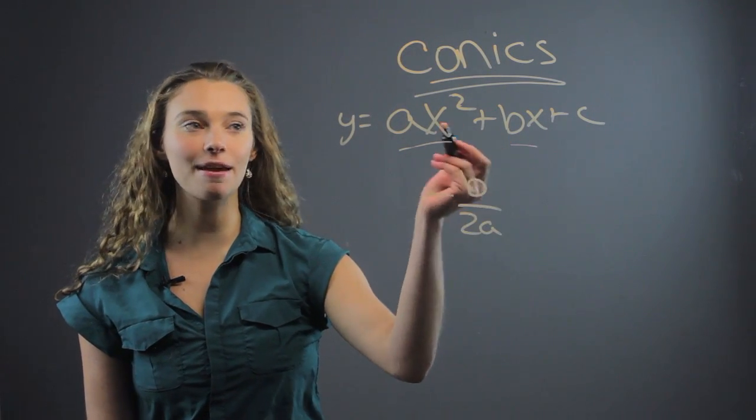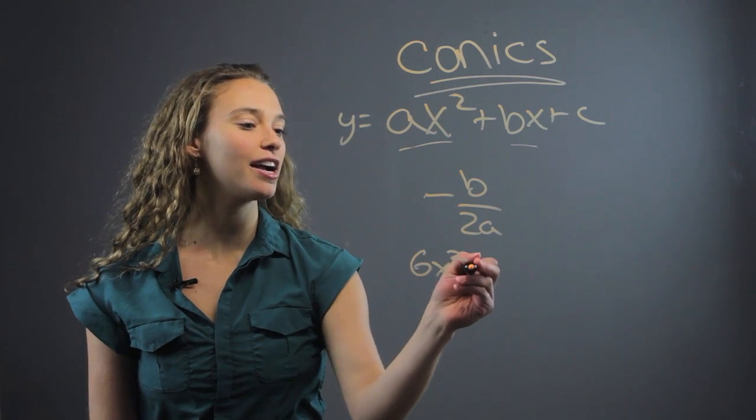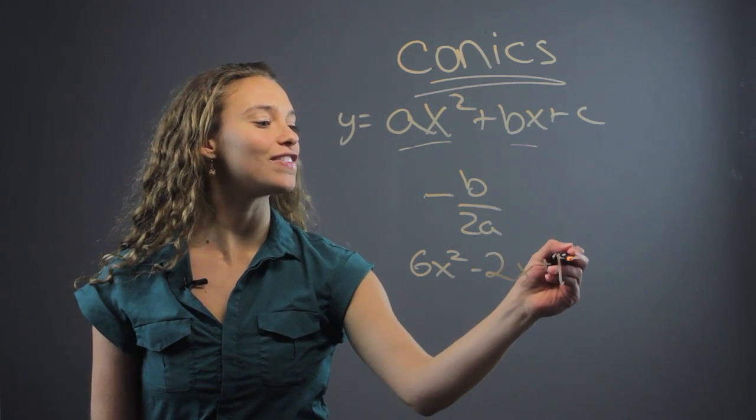So, if we have a problem like this, this quadratic might be 6x squared minus 2x plus, let's say, 15.